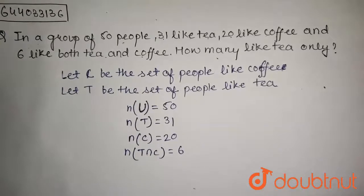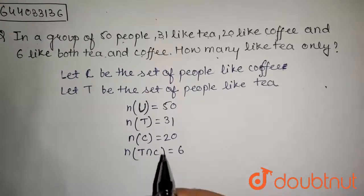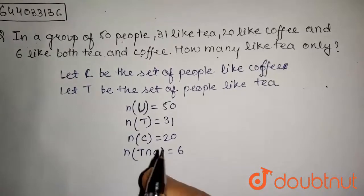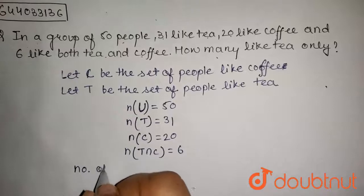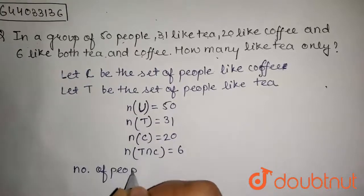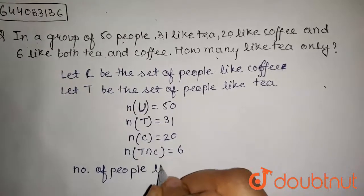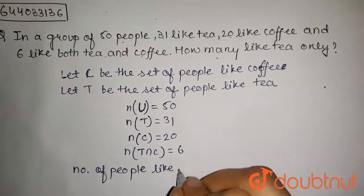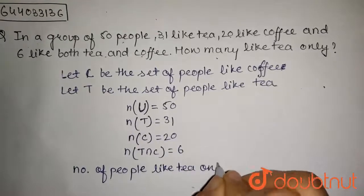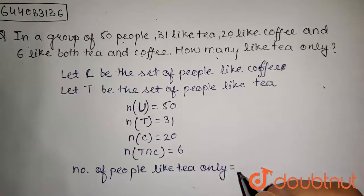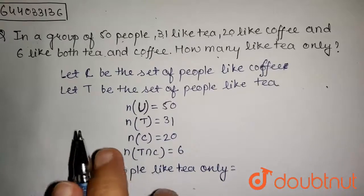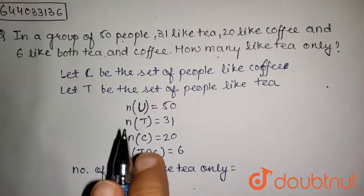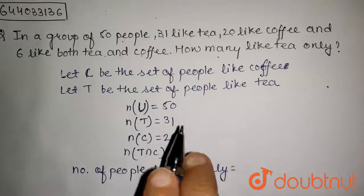From this, we have to find who like tea only. So number of people like tea only will be equal to number of people who like tea and coffee minus number of people who like tea and coffee both.